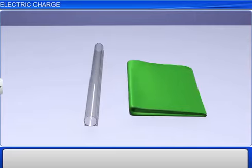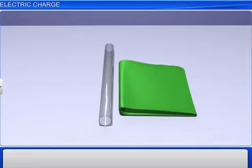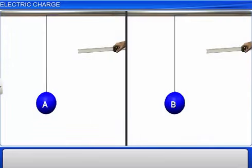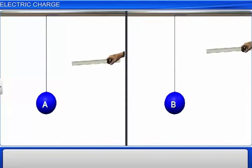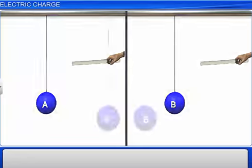Now, bring one charged glass rod in contact with a pith ball and then separate them. Then bring the other charged glass rod in contact with another pith ball and then separate them too. When these pith balls are kept close to each other without contact, we observe that they repel each other.